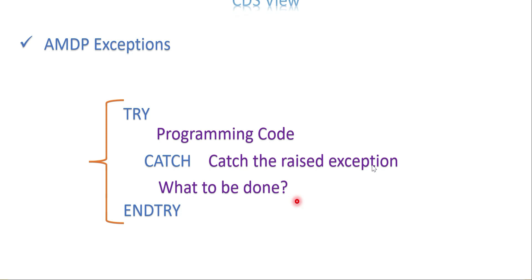Very recently we have been using try-catch for new ABAP syntax when reading data from an internal table. There is a famous exception called itab_line_not_found. If the internal table is empty, it raises that exception internally. To capture it, we use the try-catch block with the itab_line_not_found exception class and catch it. The same approach we are going to apply for AMDP as well.